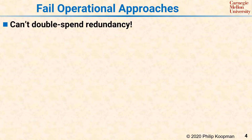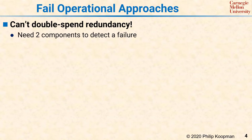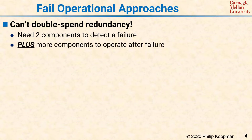It is extremely important to realize that you cannot double-spend your redundancy. Detecting a failure takes two components. If you want to operate after that failure, you need at least one additional component beyond that, or you risk component failures being able to make the system unsafe.